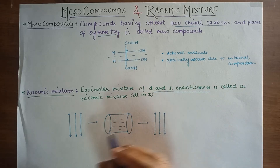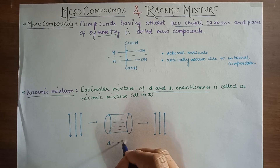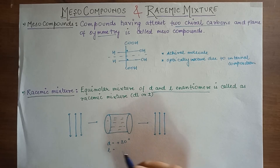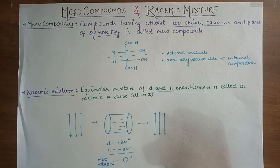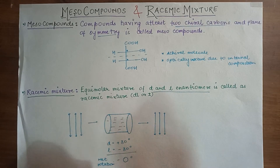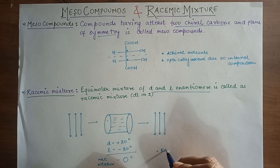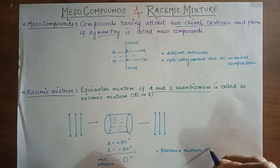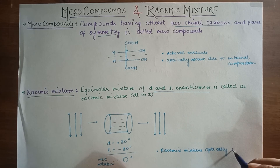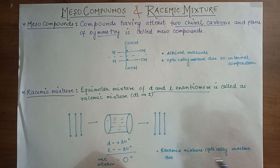We will see that plane polarized light will remain unaffected. Why unaffected? Because if D is rotating the light by plus 30 degrees, then the L enantiomer will rotate it by minus 30 degrees. So the net rotation will be zero degrees. As the net rotation is zero and the plane polarized light remains unaffected, the racemic mixture will be optically inactive, and it is due to external compensation.